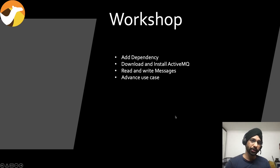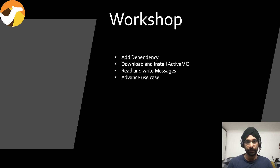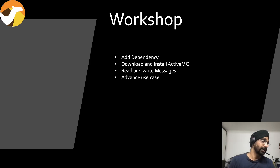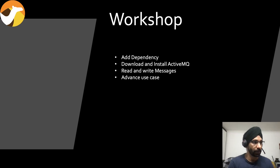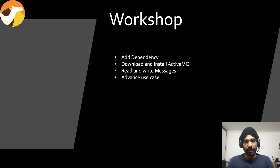In the workshop, what we're planning to do is first add a Camel JMS dependency. Then we'll download and install ActiveMQ, which is Apache's offering — a very lightweight yet quite fast messaging service. We'll try to read and write messages, and if time permits I'll try to cover one advanced use case.